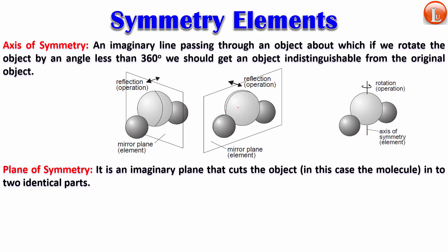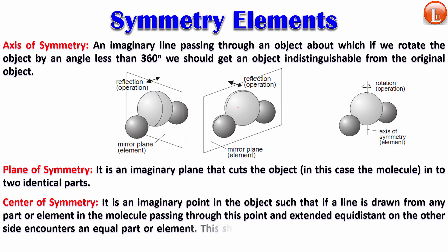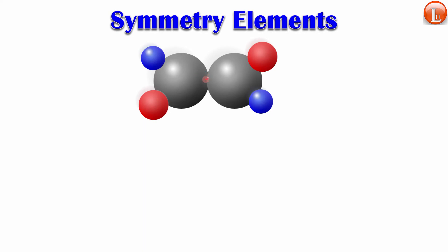The next is called a center of symmetry — an imaginary point in the object such that if a line is drawn from any part or element in the molecule, passing through this point and extended equidistant on the other side, it encounters an equal part or element. For example, from any blue atom through the center point, extended equidistant, you get another blue atom. This should hold from all parts of the molecule.